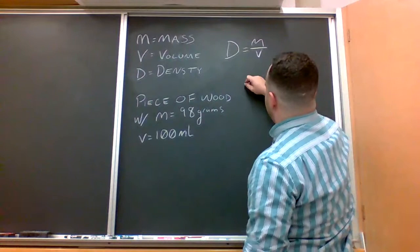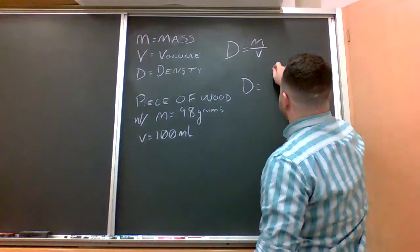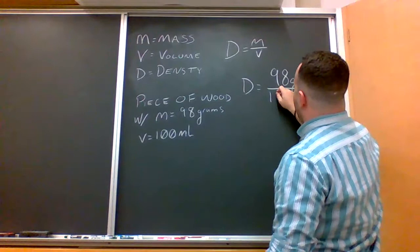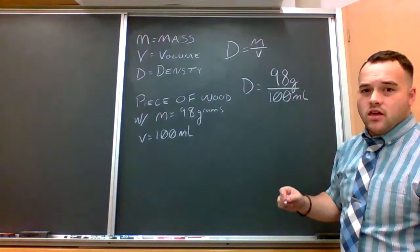So what we're going to do is set this up. We have density of the wood, and it's going to equal 98 grams divided by 100 milliliters.